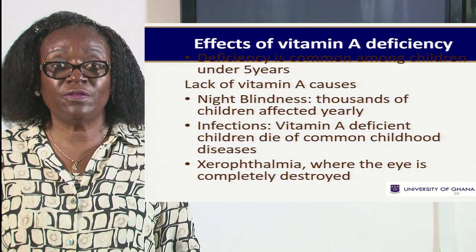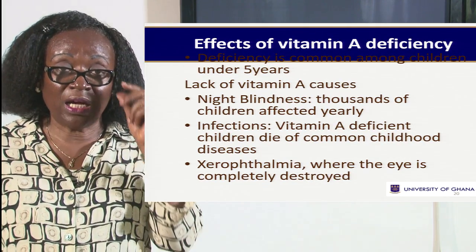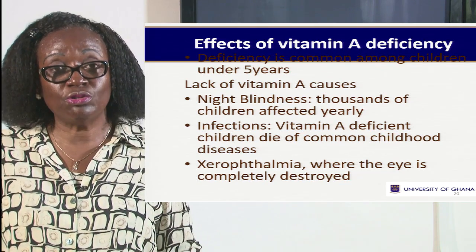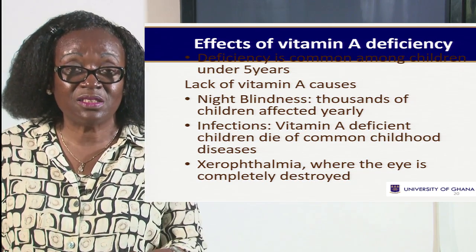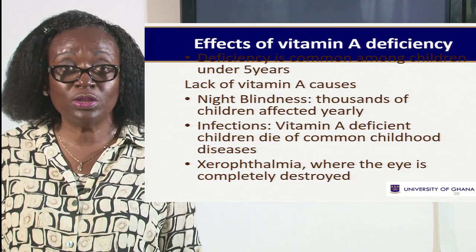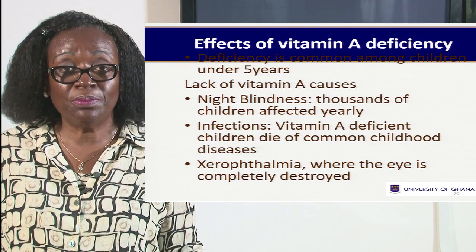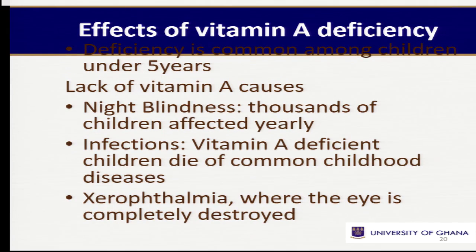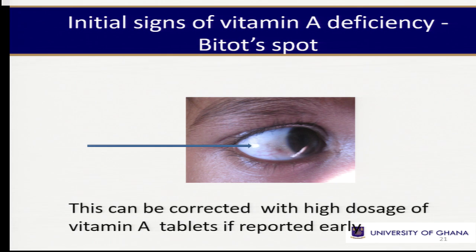Once you know a function of any nutrient, if that nutrient is lacking, that function cannot be performed — that tells you what the deficiency causes. So lack of vitamin A leads to growth retardation, vision problems, blindness, and increased infection due to compromised immunity. One important deficiency sign is what you call Bitot's spot — a white foamy patch on the eye — which can be seen during eye examination.